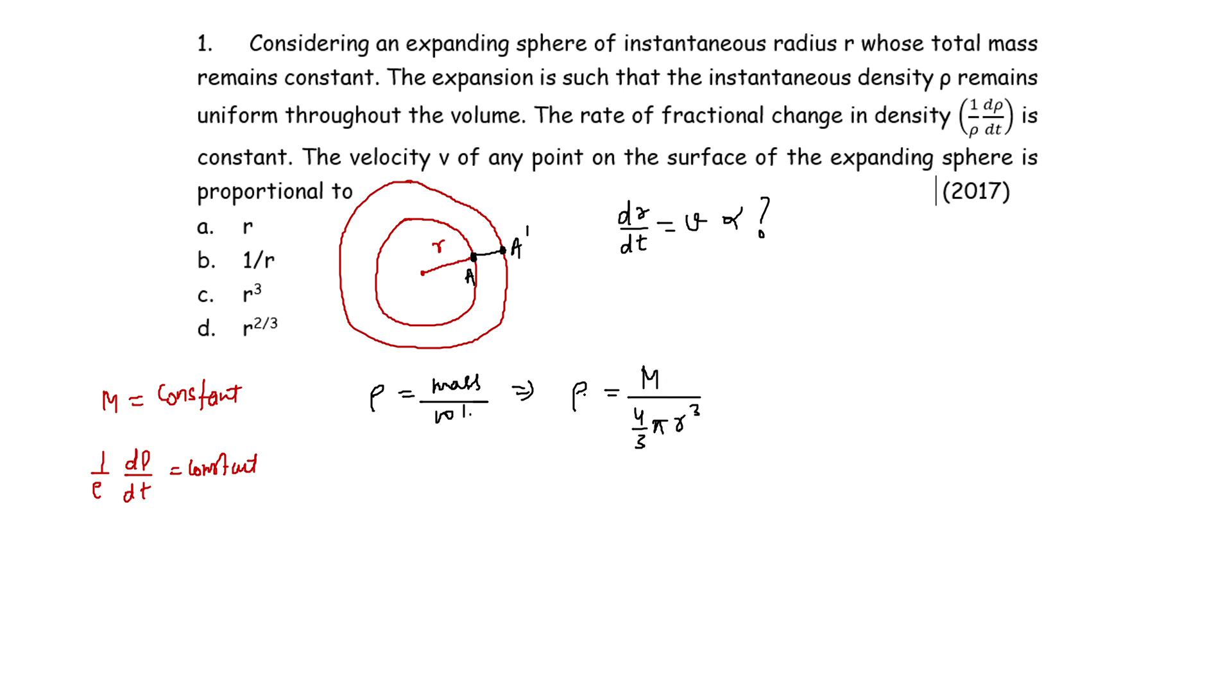Now we have to calculate dr by dt. We can easily see that from this equation we can just differentiate this one and we can then get dr by dt. But we can simplify this one. We can actually make this simpler. We already know that this is constant, and the derivative of a constant is always zero, which means if I write this equation in this manner and then I differentiate both sides, then the right-hand side will become zero.